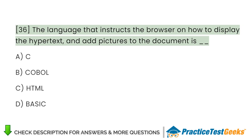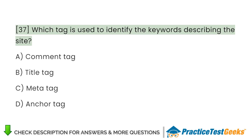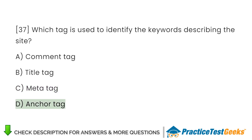The language that instructs the browser on how to display hypertext and add pictures to the document uses which tag for text? A. Comment tag. B. Title tag. C. Meta tag. D. Anchor tag.